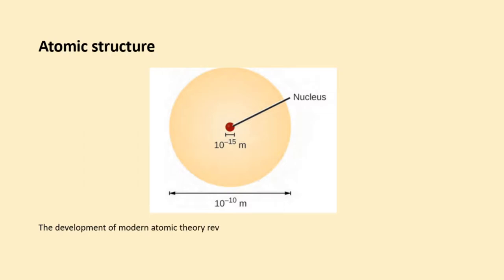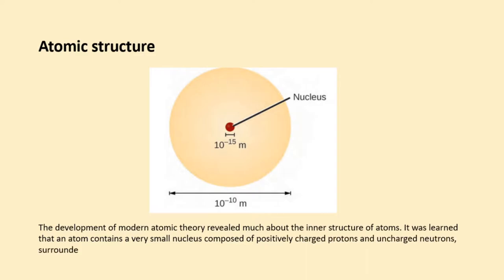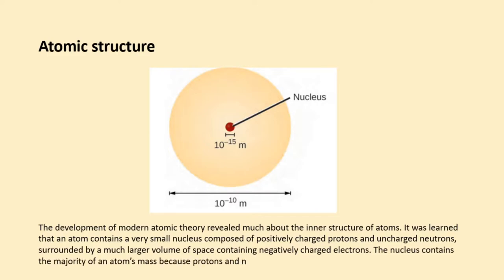The development of modern atomic theory revealed much about the inner structure of atoms. It was learned that an atom contains a very small nucleus composed of positively charged protons and uncharged neutrons, surrounded by a much larger volume of space containing negatively charged electrons. The nucleus contains the majority of an atom's mass because protons and neutrons are much heavier than electrons, whereas electrons occupy almost all of an atom's volume.